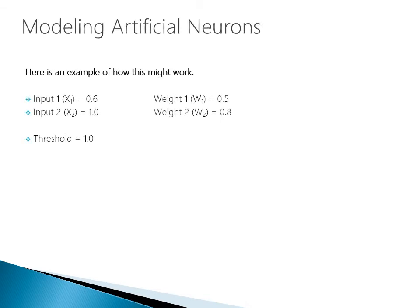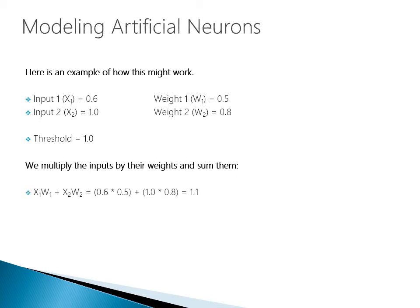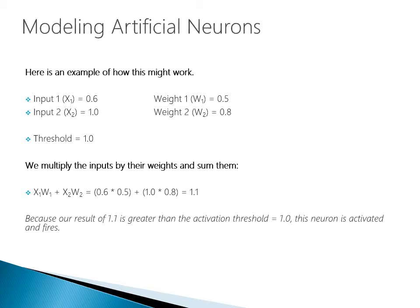Let's dive into how this example works. Imagine I have two inputs: input 1 has a value of 0.6 and a weight of 0.5; input 2 has a value of 1.0 and a weight of 0.8. My threshold is 1. We multiply the inputs by their weights and sum them: 0.6 × 0.5 plus 1.0 × 0.8 equals 1.1. Because our result of 1.1 is greater than the activation threshold of 1.0, this neuron is activated and fires — in this case producing a binary yes or no response.